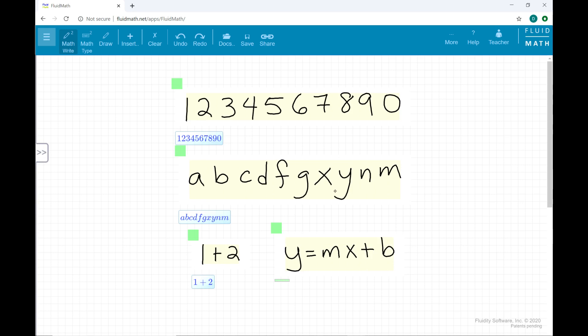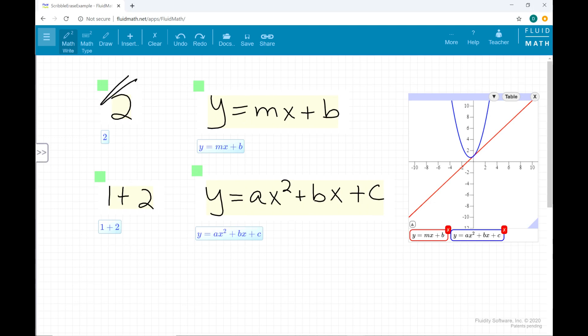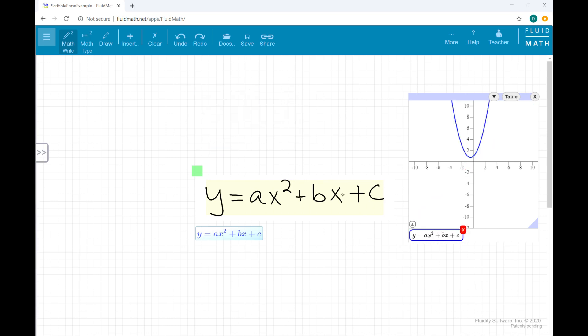The scribble erase gesture can be used to erase ink. For example, on this fluid math page, you can see me scribble over an individual symbol and groups of symbols to erase them. Be sure to scribble with several back and forths. I like to scribble back and forth five or six times to make sure the scribble gesture works.